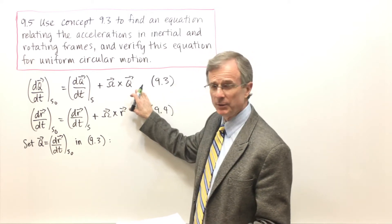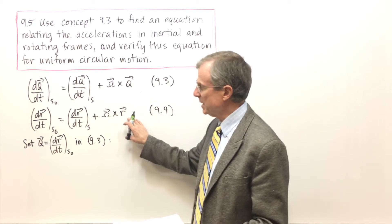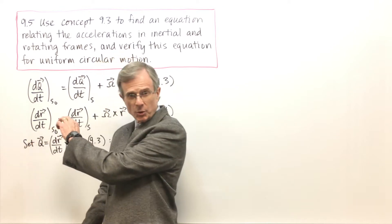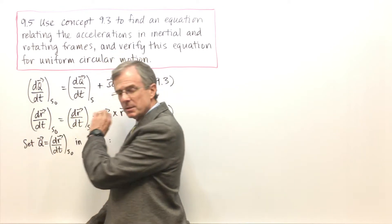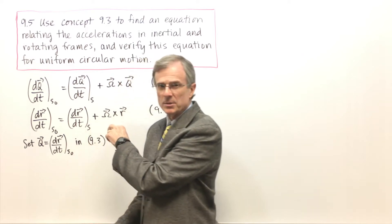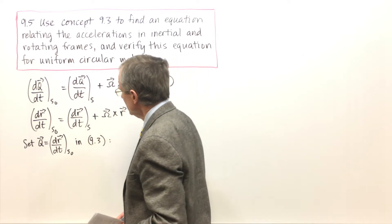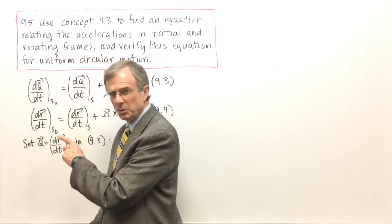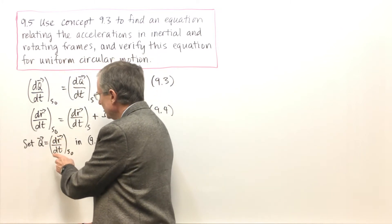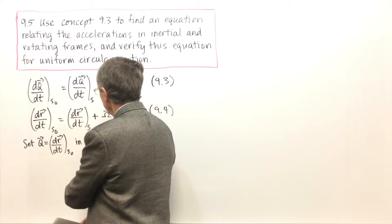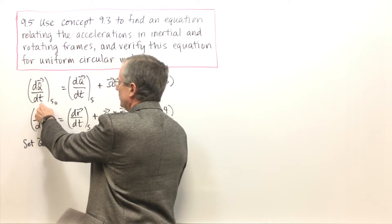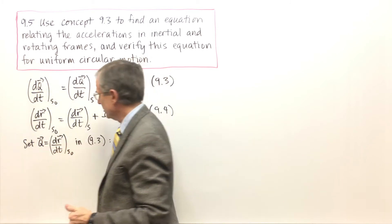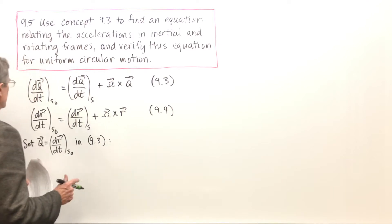This is for a general vector q, and for equation 9.4 we set q equal to r and related the velocity in the inertial frame to the velocity in the rotating frame plus omega cross r. Now in order to do accelerations, I'm going to set q equal to the velocity in the inertial frame and plug that into equation 9.3, so q is now a velocity and we'll get an acceleration.